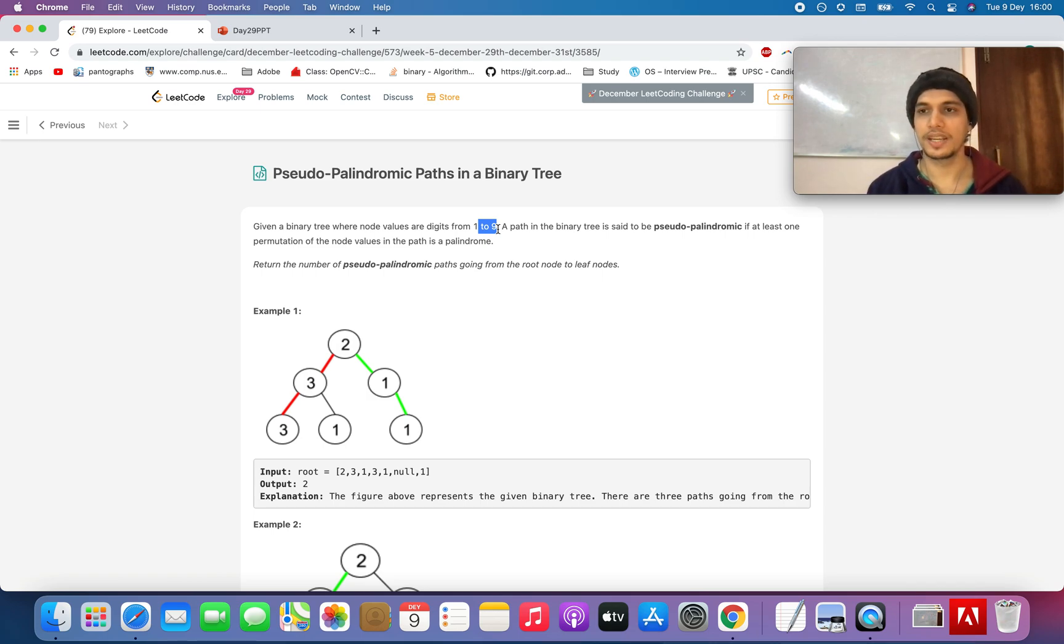How do you define a pseudo-palindromic path? Any path from the root of the node to the leaf which is a permutation of a palindromic string.